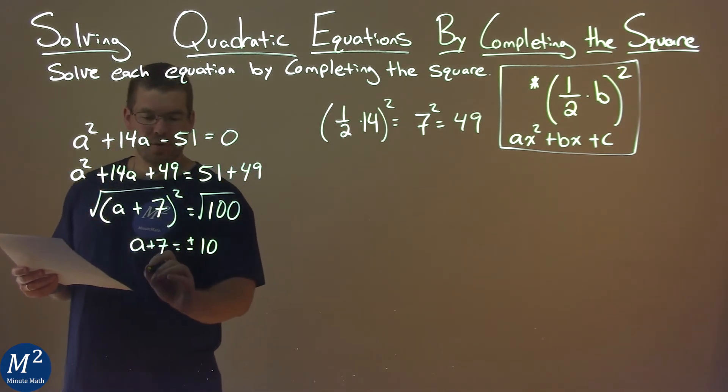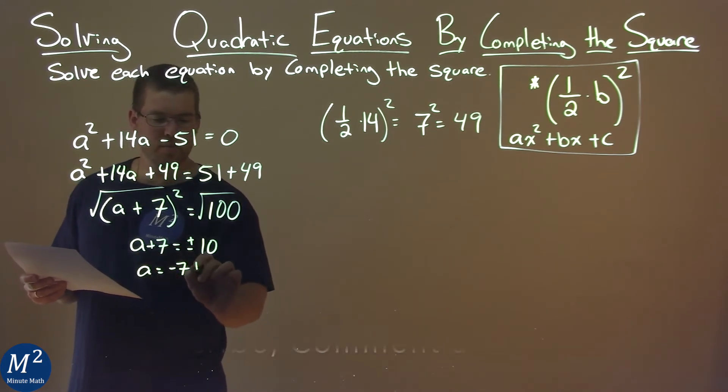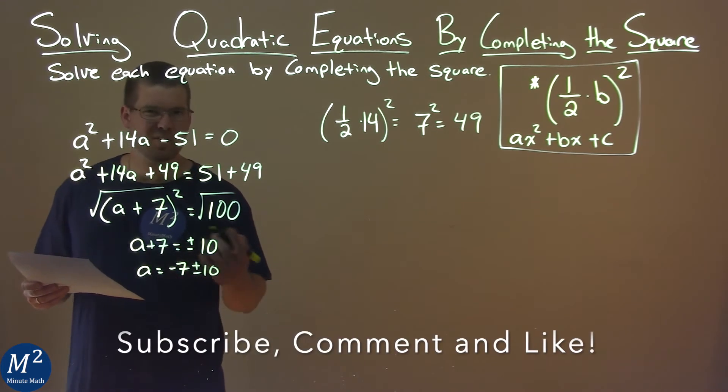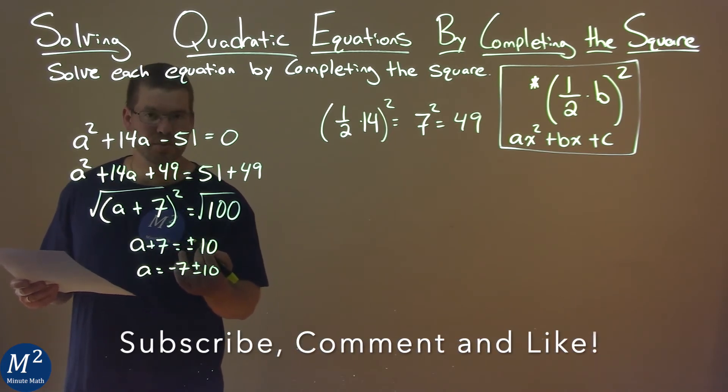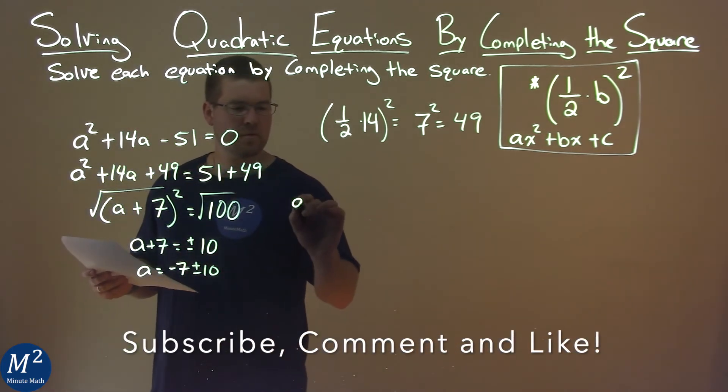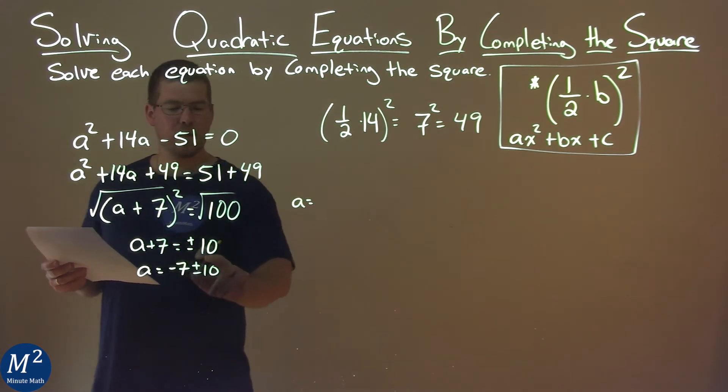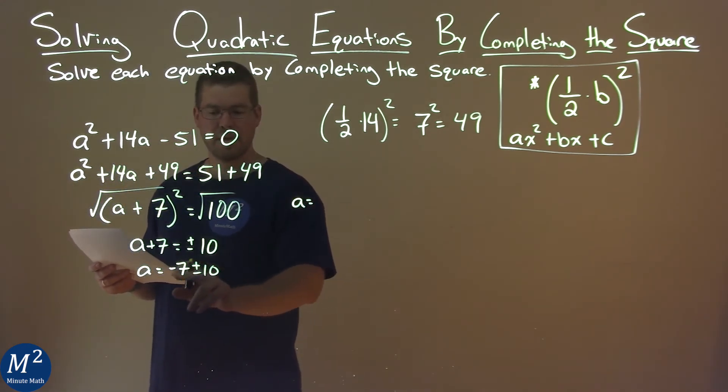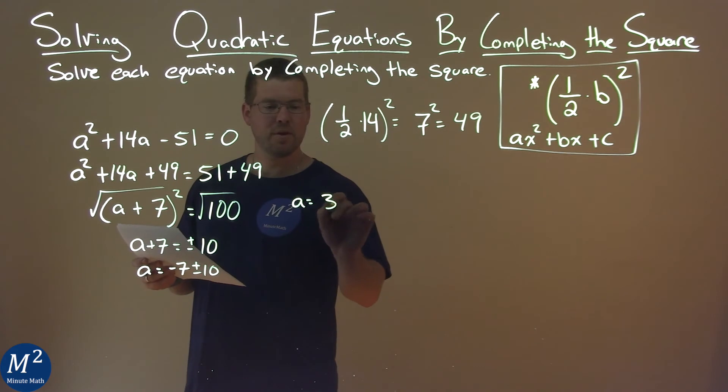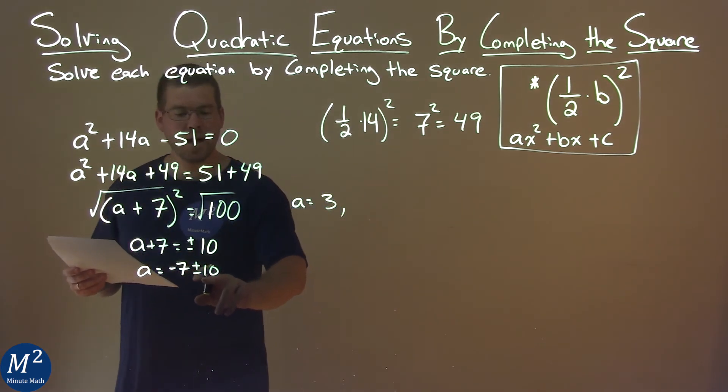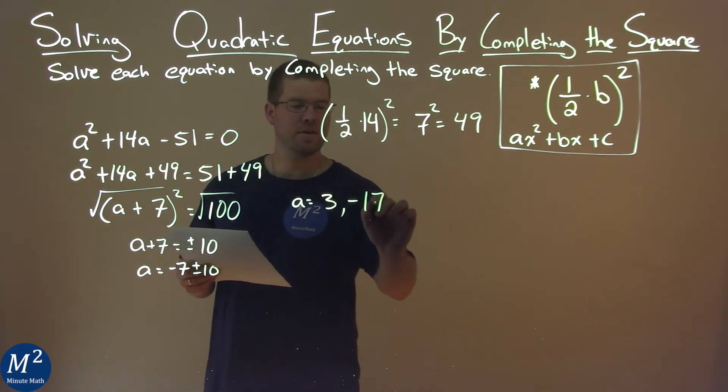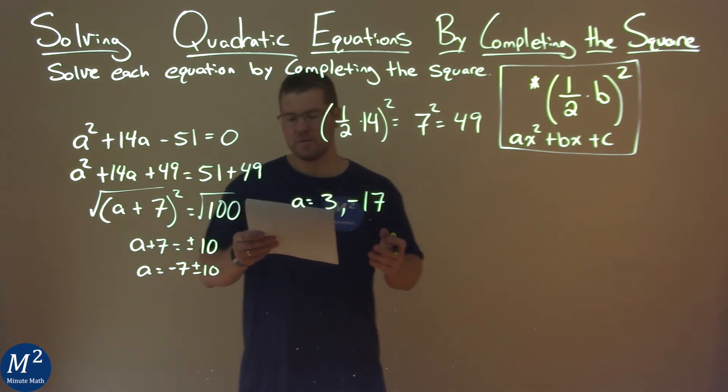So now we subtract a 7 on both sides, and we have a equals a negative 7 plus or minus 10. So let's do each one individually. Negative 7 plus 10 is a positive 3. And negative 7 minus a 10 is a negative 17. And so our two answers are a equals 3 and negative 17.